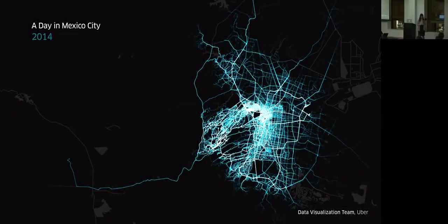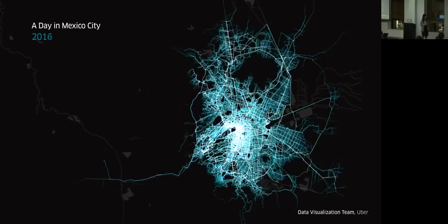Let's take a close look at different cities. This is all trips in one day in Mexico City in 2014, where each line is drawn by the GPS trace of a single trip. And this is 2016. We talk about numbers every day — like doing a couple of thousand trips in the city — but what does that really mean? By visualization, we can tell you we almost cover every single street in Mexico City in one day. The data tells you how much impact we're making in cities.